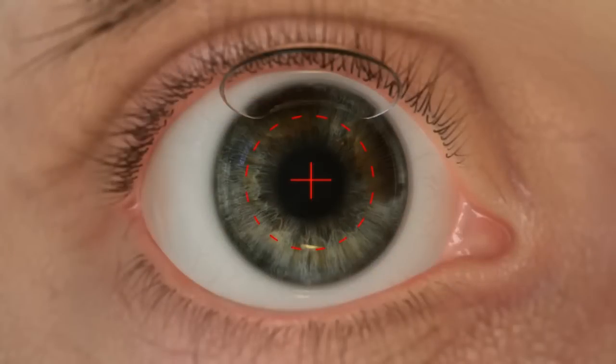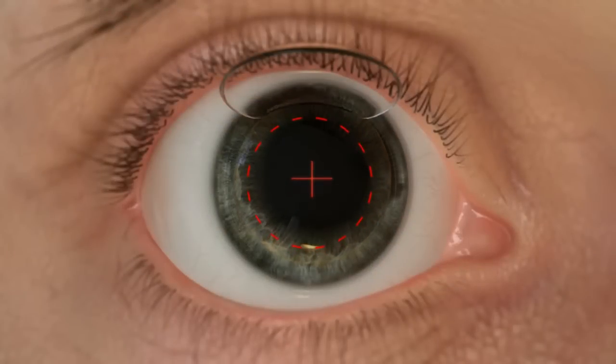Pupil dilation causes pupil centroid shift, or a shift in the visual axis. The Wavelight EX500 Excimer Laser is able to compensate centroid shift and make necessary adjustments to align with the predetermined treatment profile.